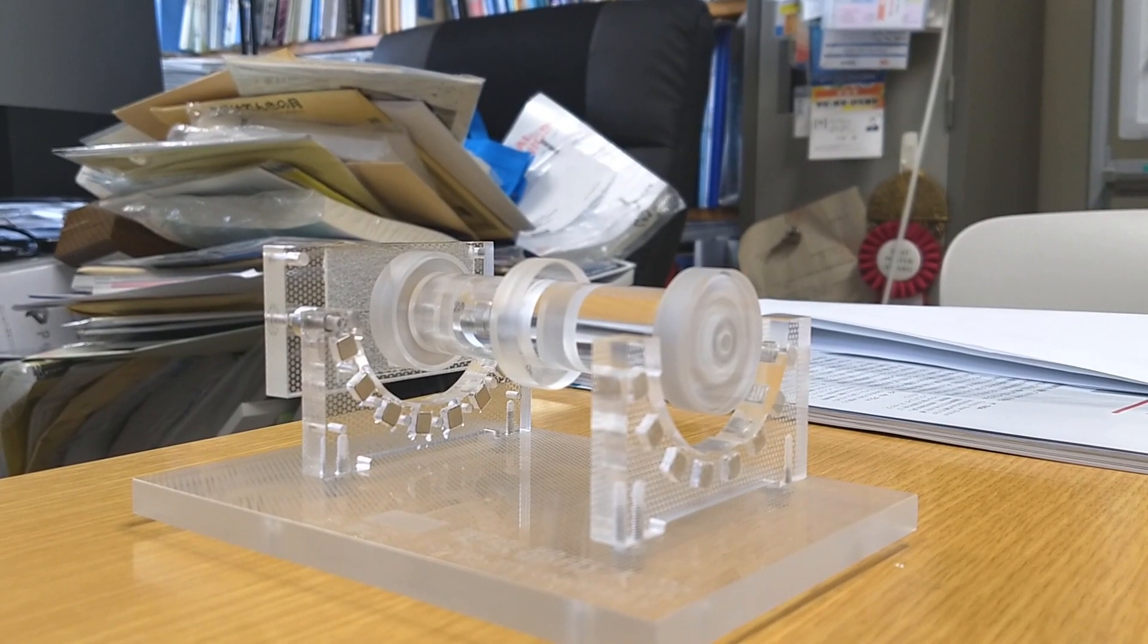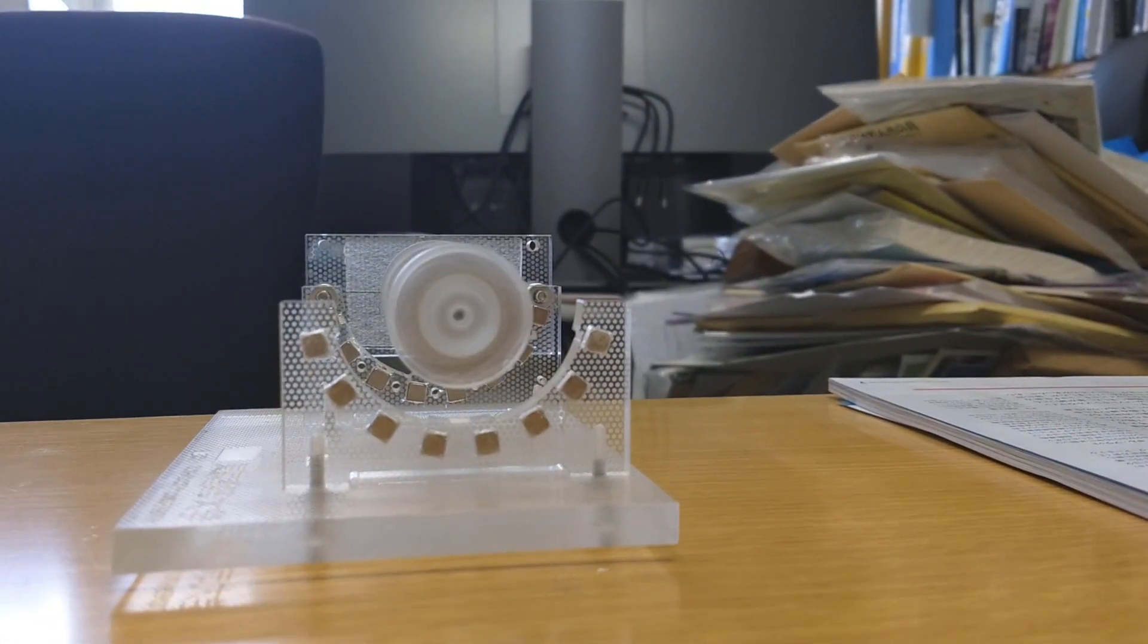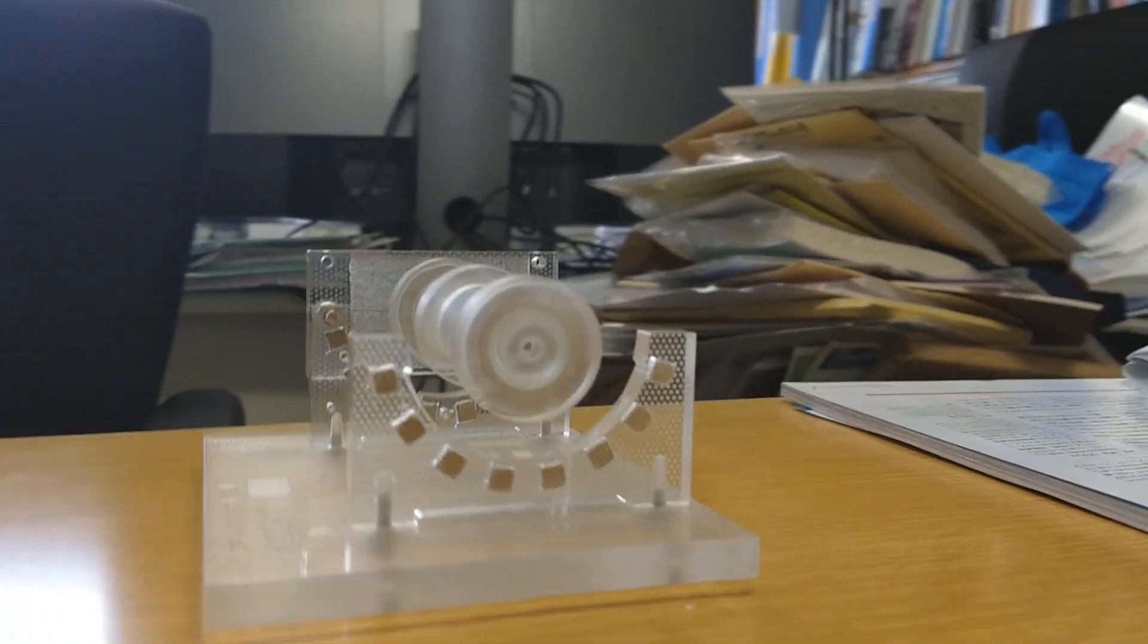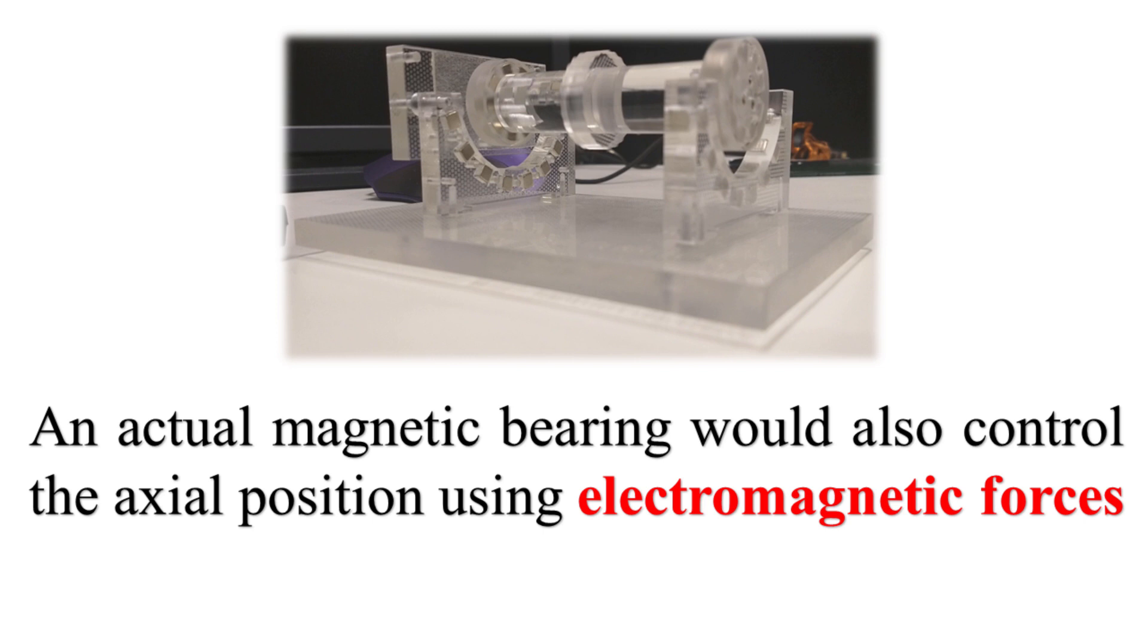This is a very primitive model of a magnetic bearing. The difference between this and an actual magnetic bearing is that we don't use a wall to constrain the actual movement. We fix the axis position using only electromagnetic forces.